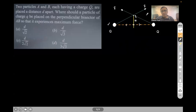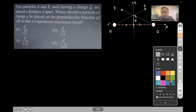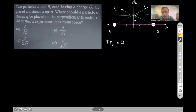To add these two forces, I'll use components. Setting up a coordinate system with a y-axis along the perpendicular bisector and x-axis along AB: the angles that both forces make are equal, and the force magnitudes are equal, so the components along the x-axis cancel out. The entire net force is along the y-axis only.